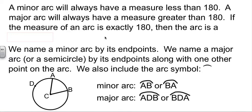One of the rules of arcs is a minor arc is always going to be less than 180. A major arc is always going to be more than 180. And if it's equal to 180, we call it a semicircle, a half of a circle. Smaller than 180 is a minor arc, bigger than 180 is a major arc, equal to 180 is a semicircle.